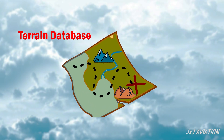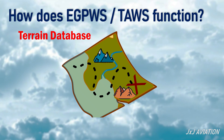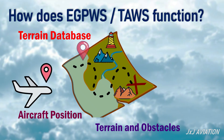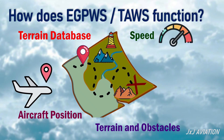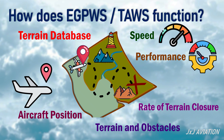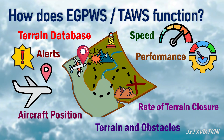How does EGPWS or TAWS function? The terrain database contains terrain and obstacle data. The EGPWS takes the aircraft position and plots it on this database. The system uses the aircraft's speed and performance information to compute the rate at which the aircraft is flying towards any terrain or obstacle. Based on these parameters, the system will trigger alerts if it detects that a collision is likely. If an alert is triggered, the flight path must be corrected.